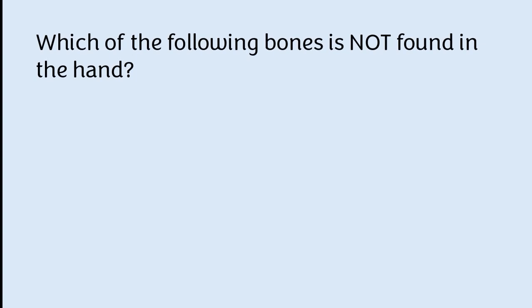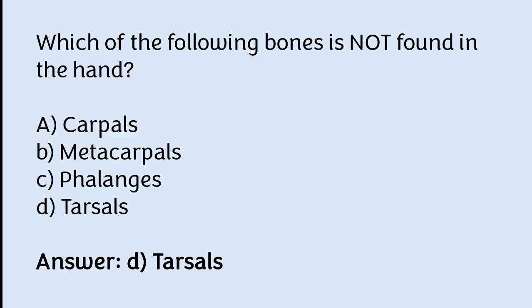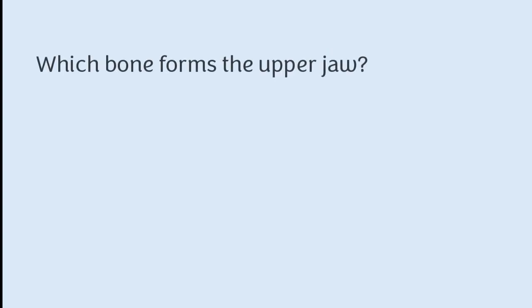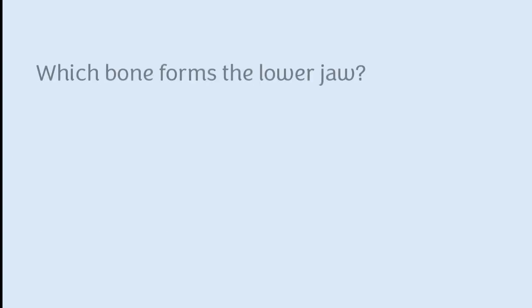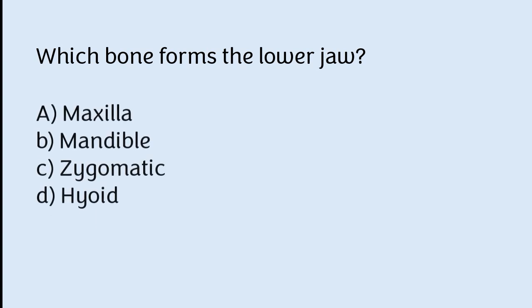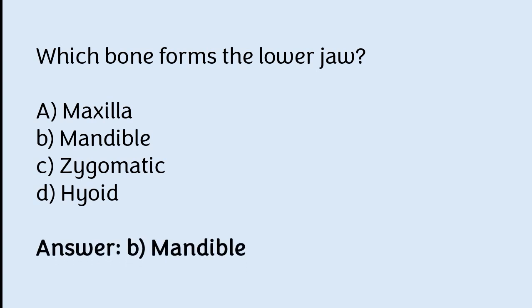Which of the following bones is not found in the hand? Carpals, metacarpals, phalanges, or tarsals. The correct answer is option D — tarsals are not found in the hand. Which bone forms the upper jaw? Mandible, maxilla, zygomatic, or lacrimal. The correct answer is option B — the maxilla forms the upper jaw. Which bone forms the lower jaw? Maxilla, mandible, zygomatic, or hyoid. The correct answer is option B — the mandible forms the lower jaw.